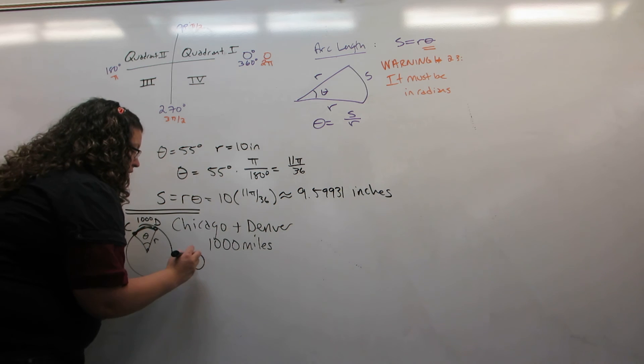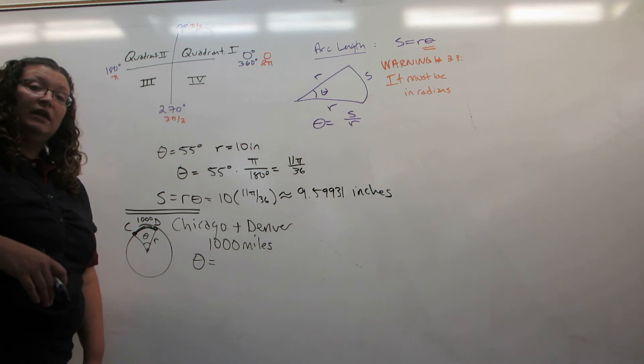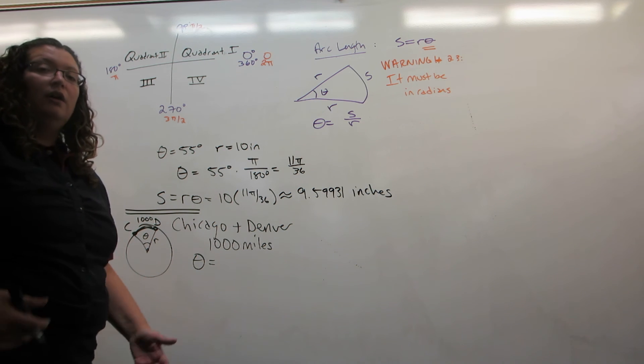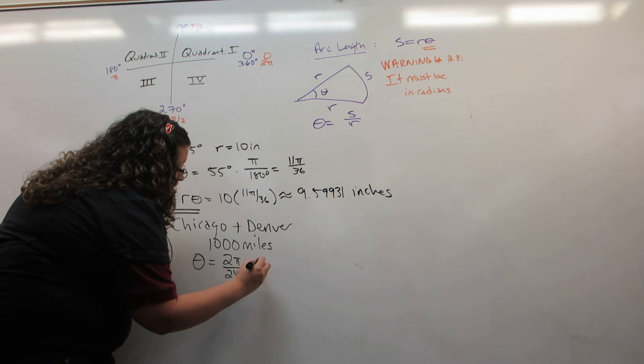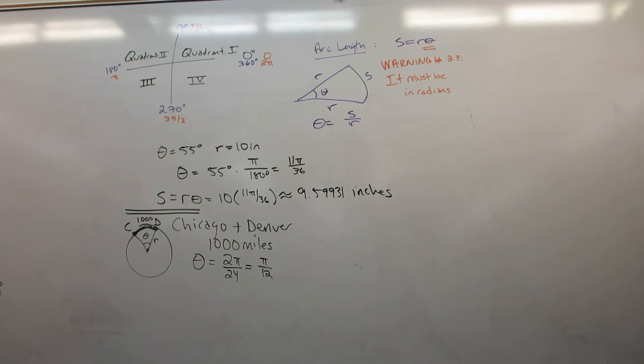What angle is cut out between these two cities? Well, they're the center of two consecutive time zones. So, it must be 1/24th of the angles, or 2 pi divided by 24, which simplifies to pi over 12.